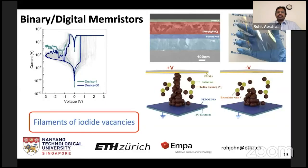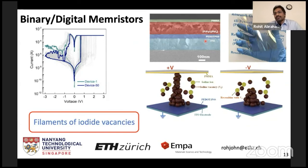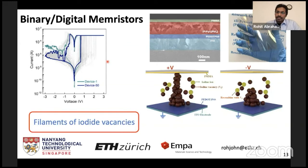We have also investigated normal metal-insulator-metal structures for implementing binary memory. To prevent fast degradation of perovskites, we encapsulate with polymeric layers such as PMMA. With these devices, we realized digital or binary memory with reasonably good endurance, and we can make them flexible, bendable, and in several form factors.